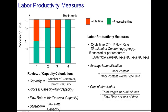Let me formalize the concept of line balancing, but first let's review some basic definitions. We define the capacity of a resource as a ratio between m, the number of people or machines at this resource, divided by the processing time. We define the process capacity as the minimum of the capacities of the various resources in the process, and the flow rate as a minimum between demand and capacity. We previously defined utilization as a ratio between flow rate and capacity.